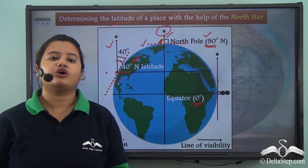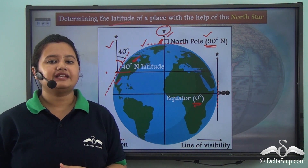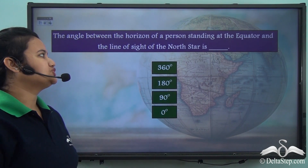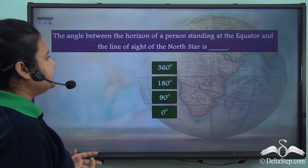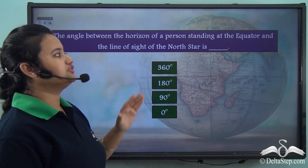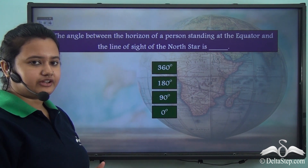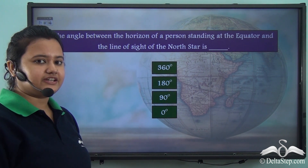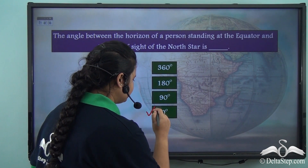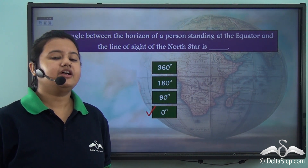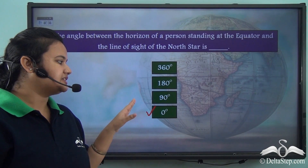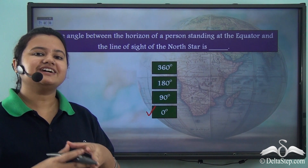There is another method of measuring the latitude of a place. Before we proceed, let us answer this: the angle between the horizon of a person standing at the equator and the line of sight of the North Star is — 360 degrees, 180 degrees, 90 degrees, or 0 degrees? The correct answer is 0 degrees. This is because at the equator, the horizon and the line of sight of the North Star coincide, so the angle between them is 0 degrees.